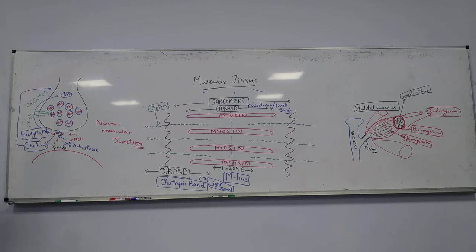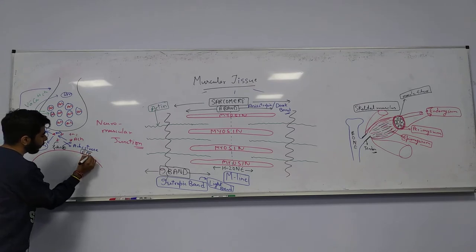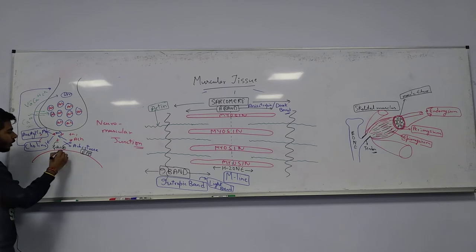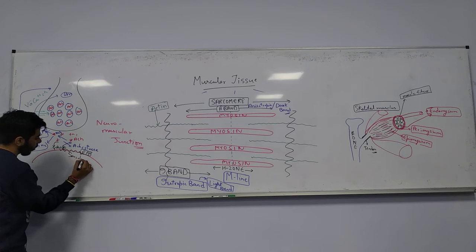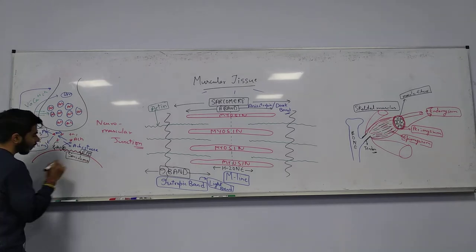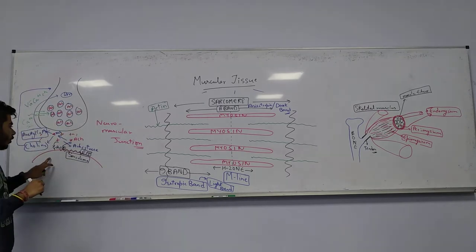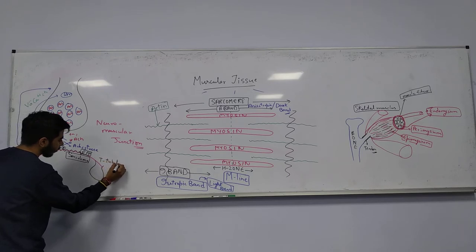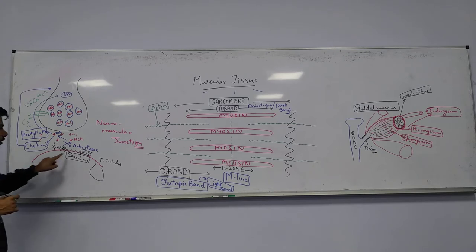As acetylcholine binds to its receptors, there will be initiation of the end plate potential (EPP). The end plate potential moves along the sarcolemma — the muscle cell membrane — until it reaches the T-tubules.